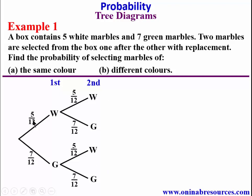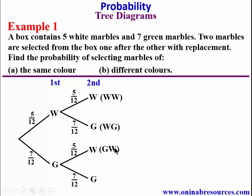So we are done. How do we get the possible outcomes? We read along the line. This is W-W, meaning the first one is white and the second one is white; and W-G, the first one is white and the second one is green; or G-W, the first one is green and the second one is white; and G-G, which is green-green.